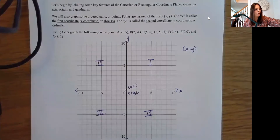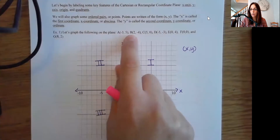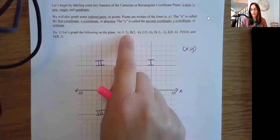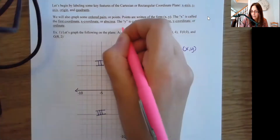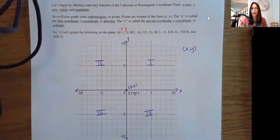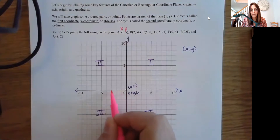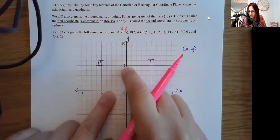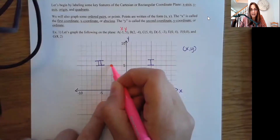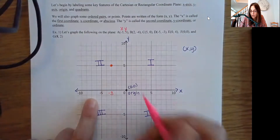Let's practice plotting some points. I have a few points labeled with letters, which is pretty common — we'll say point A or point B rather than constantly stating the pair. For point A at (-3, 5), I remember my x value comes first and my y value second. I find x at negative three, then y at five, and match those two values up to form my point — I can see it's at five on the y-axis and negative three on the x-axis.